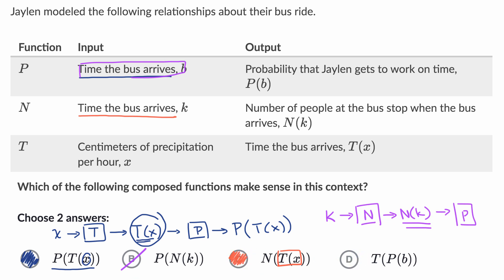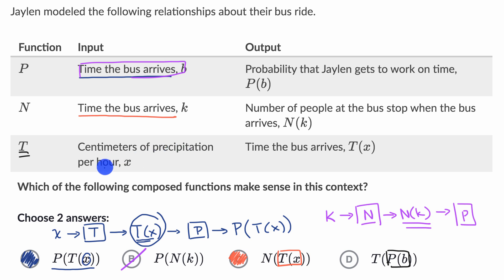I'm guessing I won't like choice D, but let me validate that. P of b gives us the probability that Jalen gets to work on time, and then we're inputting that into function t, which expects centimeters of precipitation per hour. You're trying to take a probability and input it into a function that expects centimeters of precipitation per hour — that's not going to work out. So I would rule that one out as well. So I like A and C.